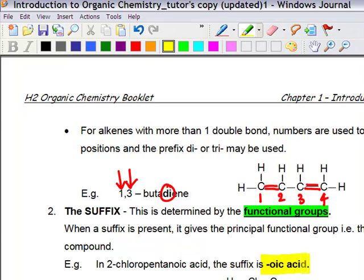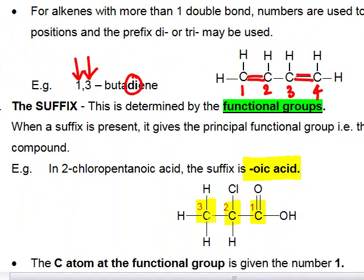And let us look at how it is named. Now there are three carbons: one, two, three. And we start naming from the carbon at the functional group, which is given the number 1.